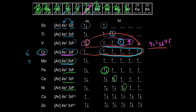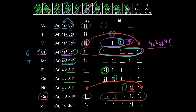Copper gives us another anomaly. You might expect [Ar] 4s² 3d⁹, but instead we get [Ar] 4s¹ 3d¹⁰. An electron has moved from the 4s orbital to complete the d subshell. One explanation is that a fully filled d subshell is especially stable for copper. Again, general chemistry explanations are a bit too simple for reality, but they're a good starting point.